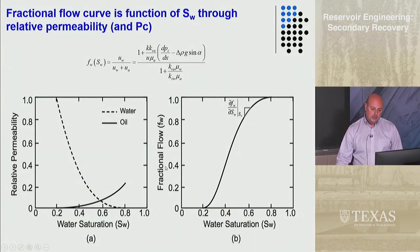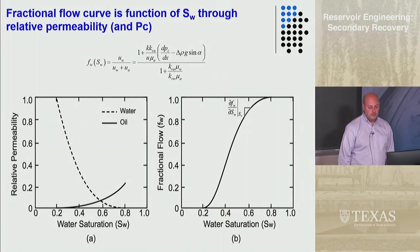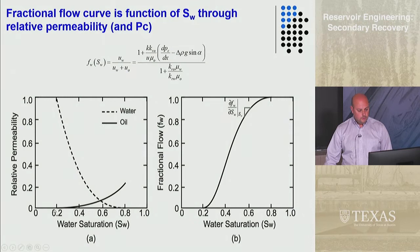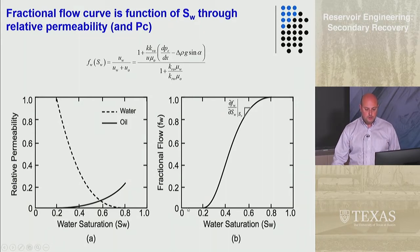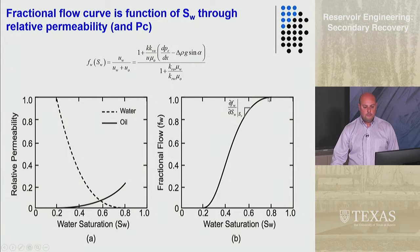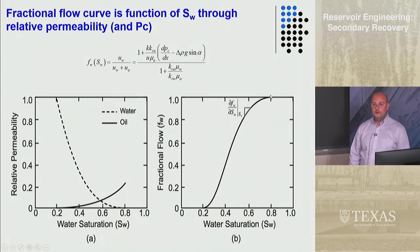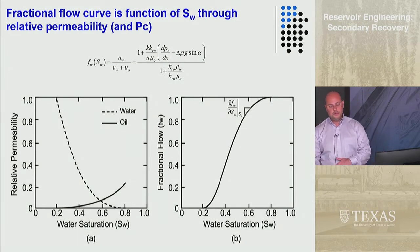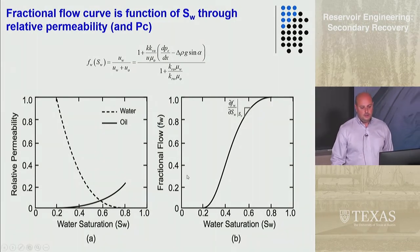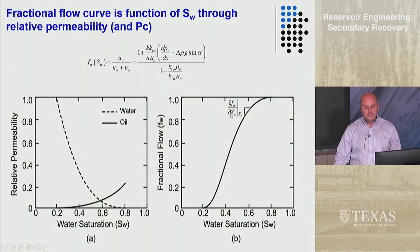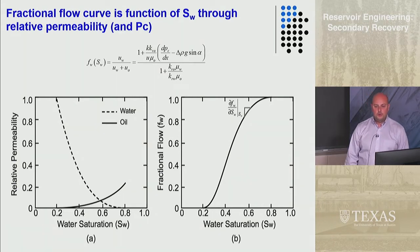This is what a typical f_w versus S_w plot looks like. If the residual water saturation is 0.2, no water flows at or below 0.2, so f_w is 0. Then it increases, has an inflection point — that's important. When you reach 1 minus the residual oil saturation, around 0.8, the fractional flow of water is 100% because no oil is flowing. We could also take the derivative of this curve, called df_w/dS_w or f_w prime, which is the slope of the tangent line. We'll introduce that in a few moments.